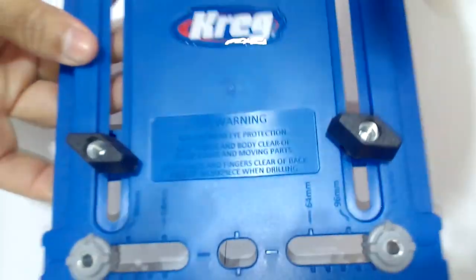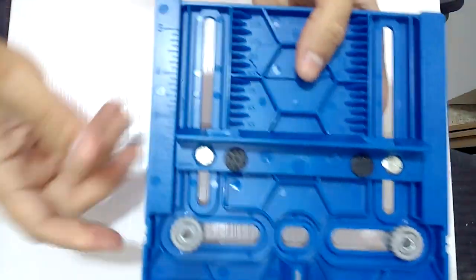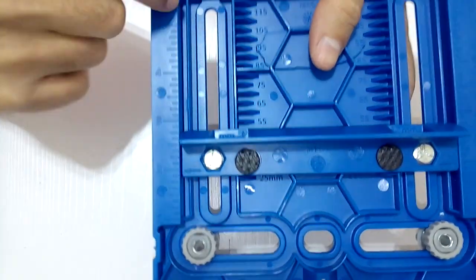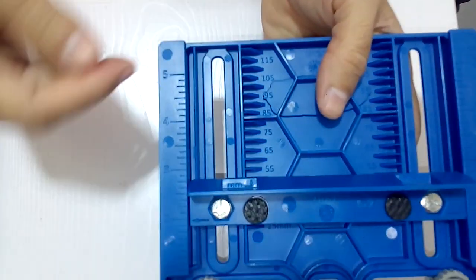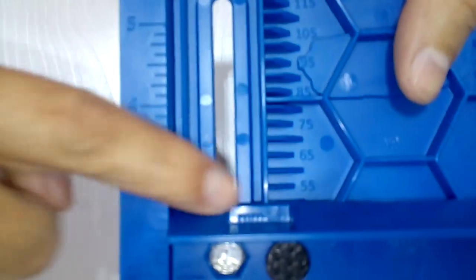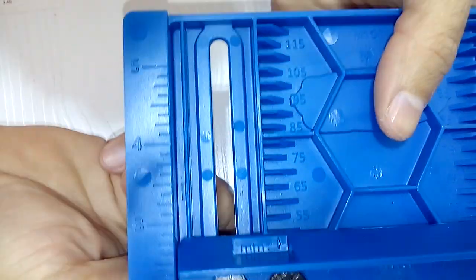We flip our template and here we can see the measurements in inches and here we can see them in millimeters. I'm going to place it to make the installation 60 millimeters from the edge.